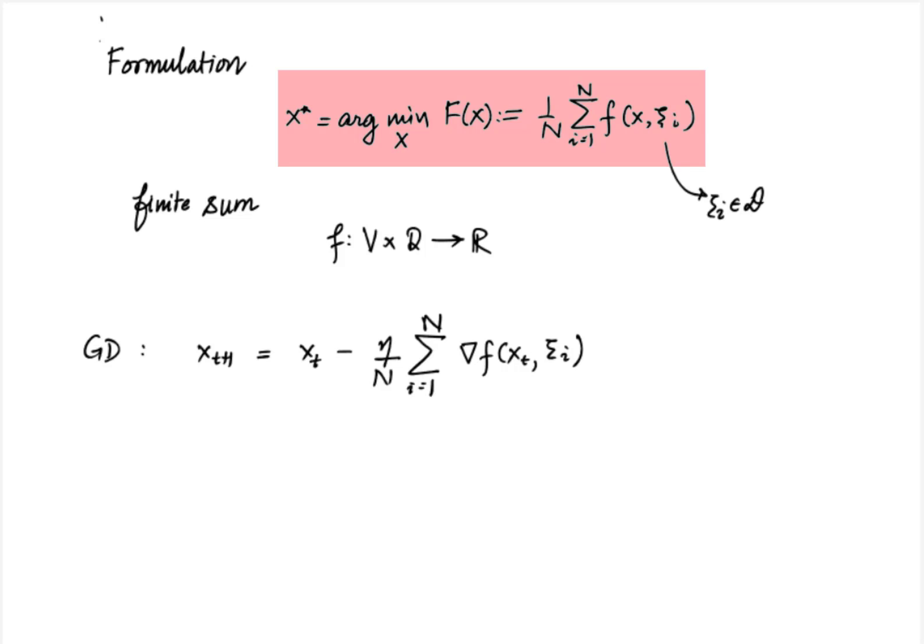However, the finite sum structure often arises in many applications where n is large. For these settings even gradient descent is not viable because the calculation of the gradient of the objective function requires us to calculate the gradient of each of its n components and then average them.